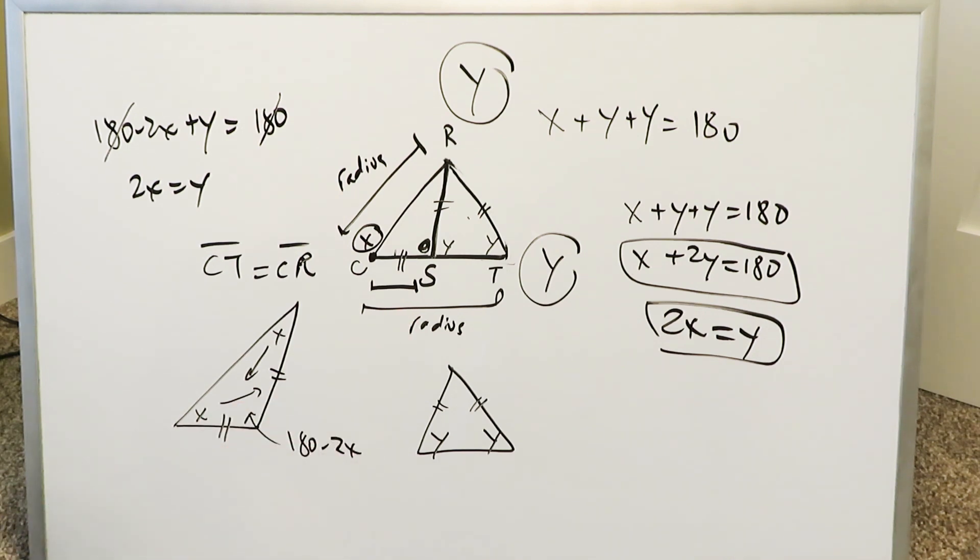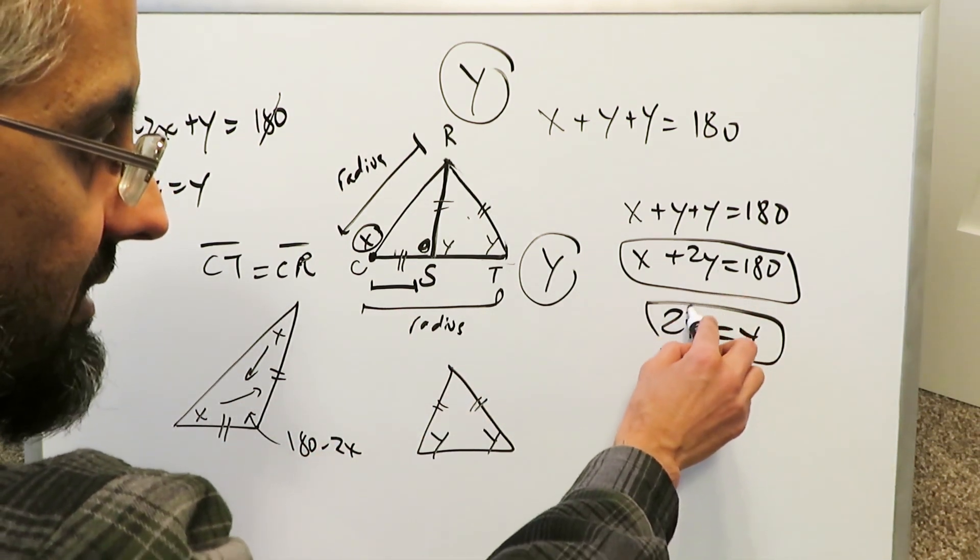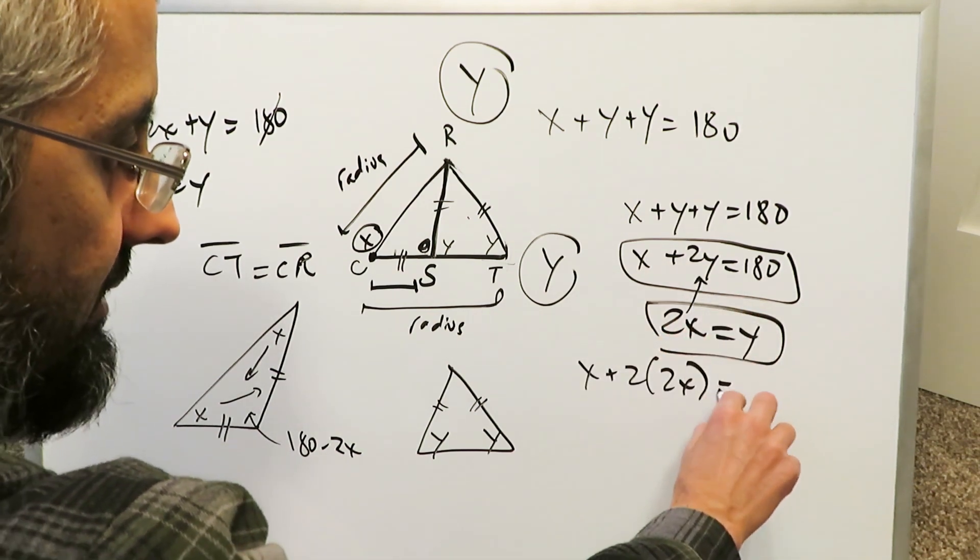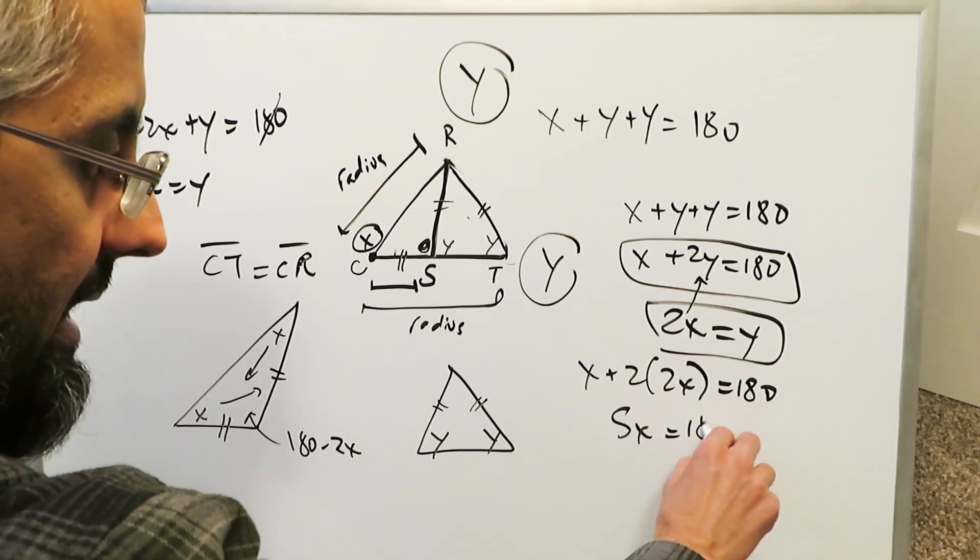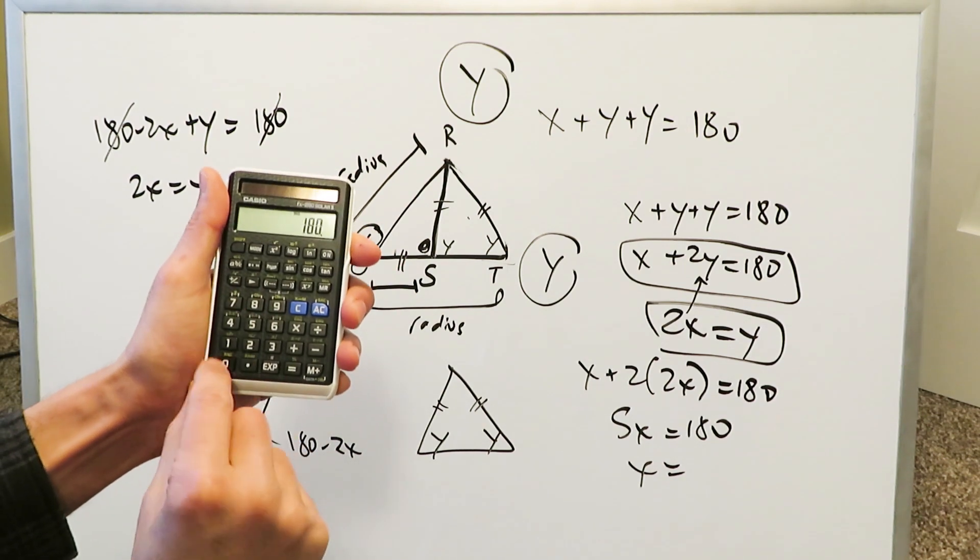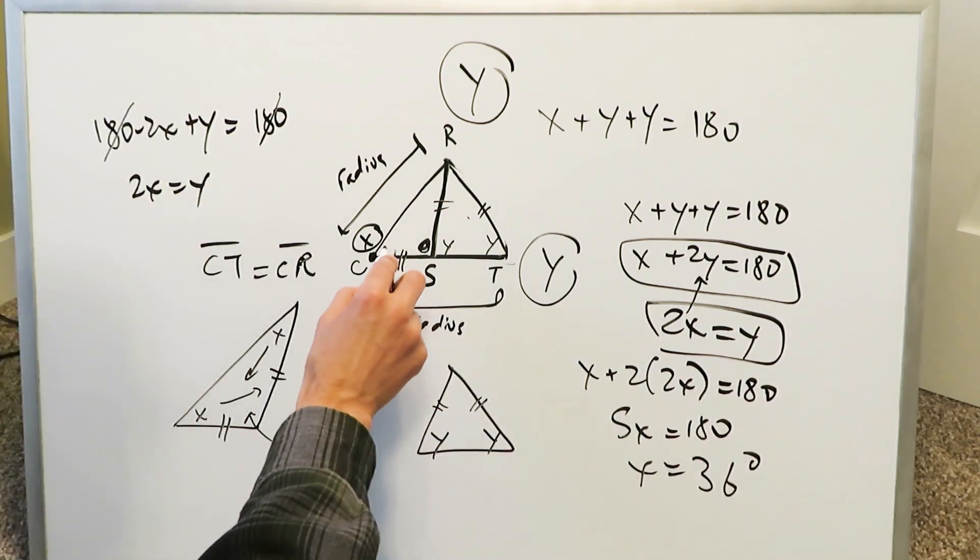And now it's easy from here. You just have to solve for X. If Y is equal to 2X, you can substitute this right over here. You'll have X plus 2 times 2X is equal to 180. You'll have here 5X is equal to 180. And now you can solve for X. You'll just do 180 divided by 5. 180 divided by 5 and you'll get 36 degrees.